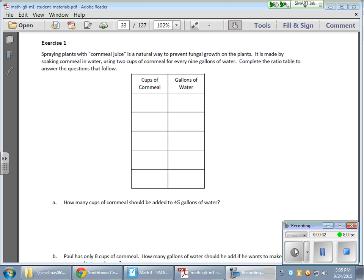So the important values here are two cups of cornmeal for every nine gallons of water. In my ratio here, I should start with the value of the bottom ratio. The first ratio is two cups of cornmeal for every nine gallons of water, and then we're going to grow from there.